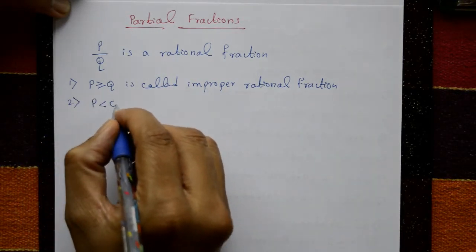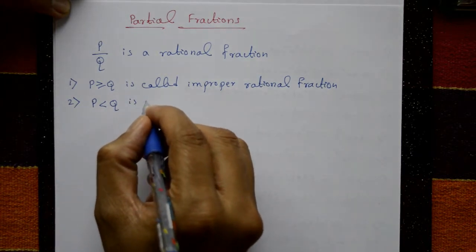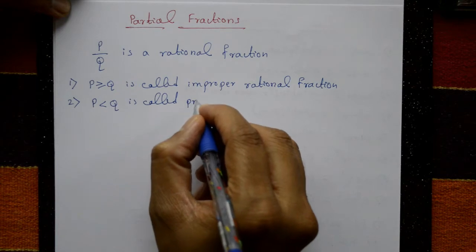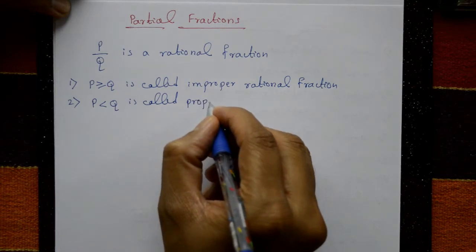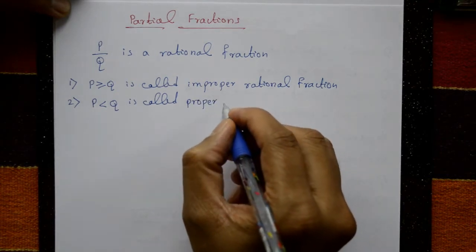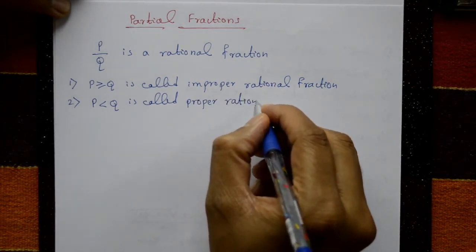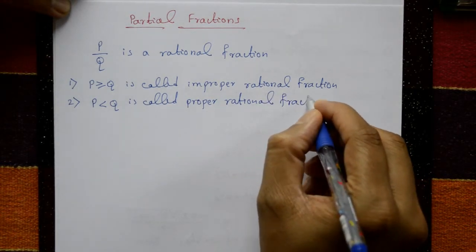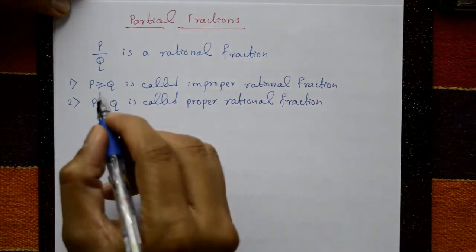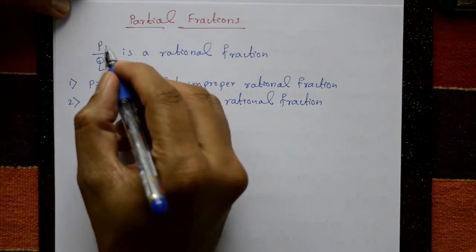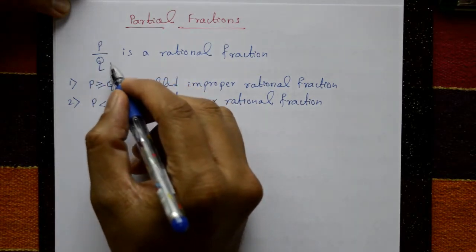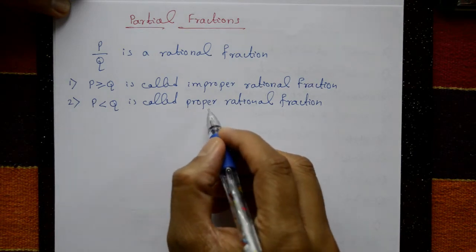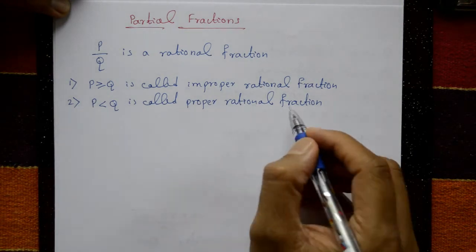Second case: when the degree of P is less than the degree of Q, it is called a proper rational fraction. That means when the numerator degree is less than the denominator degree, it is called a proper rational fraction.